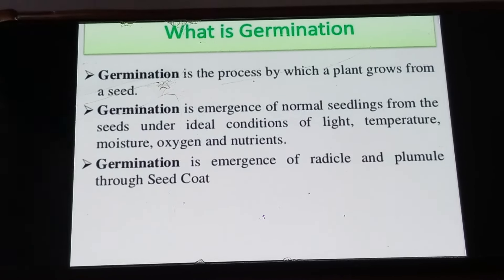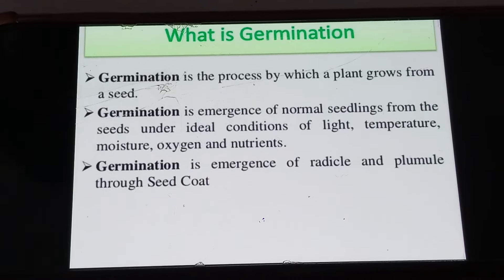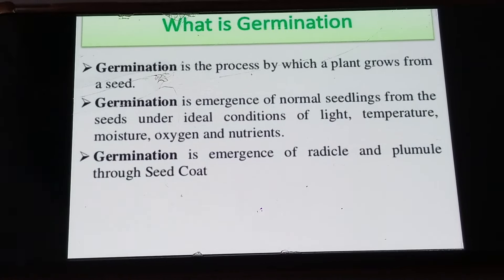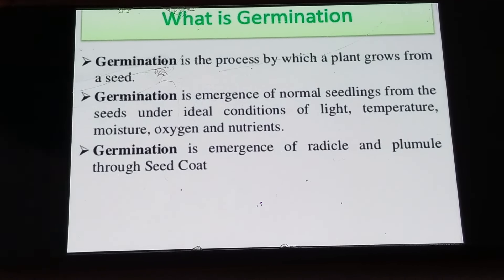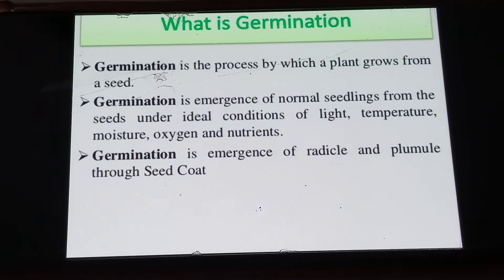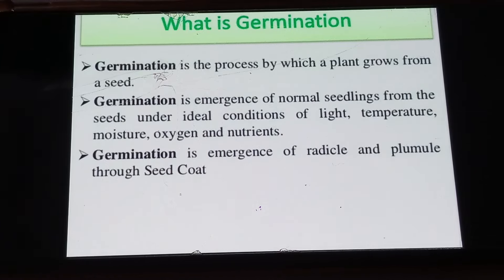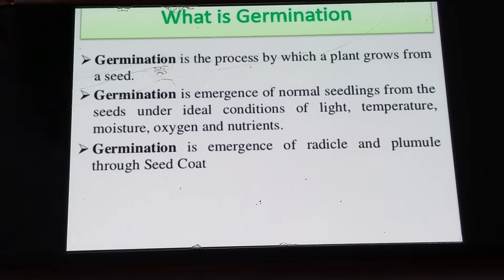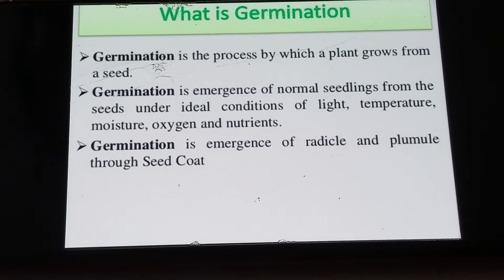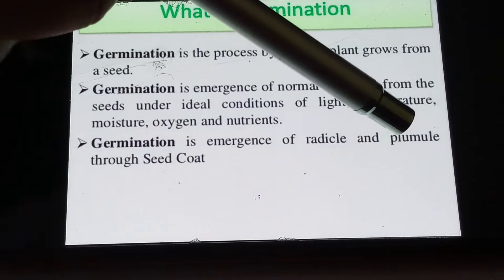For a seed to germinate, it requires favorable conditions like light, optimum temperature, moisture, oxygen, and nutrients. Only when it is placed in favorable conditions will the seed germinate and grow into a new plant. When the process of germination takes place, the radicle and the plumule are developed from the seed, where the radicle will grow into the root and the plumule will develop into the shoot of the plant.